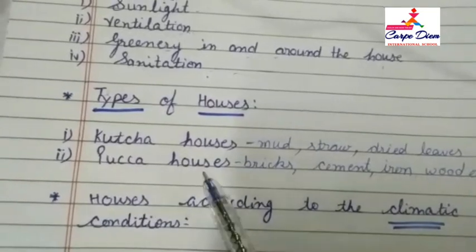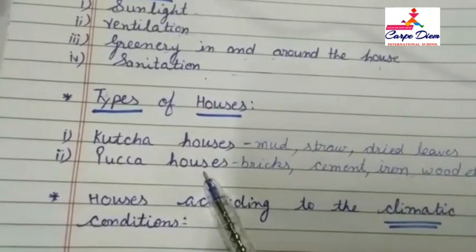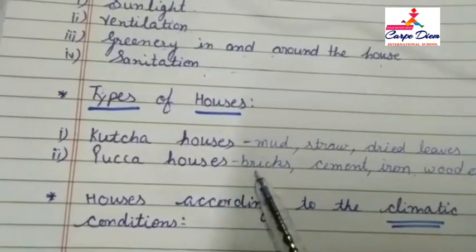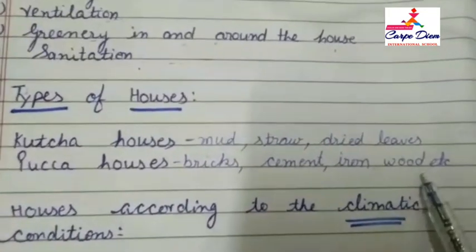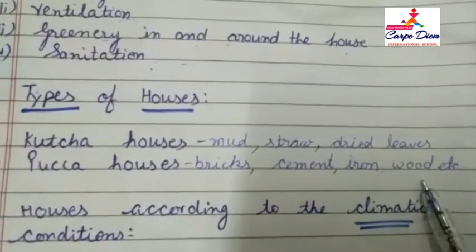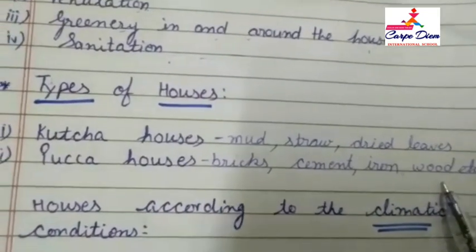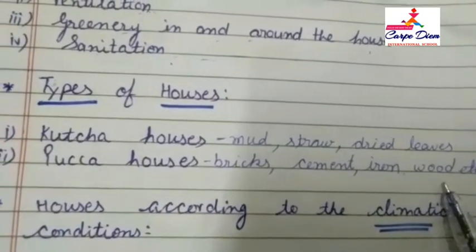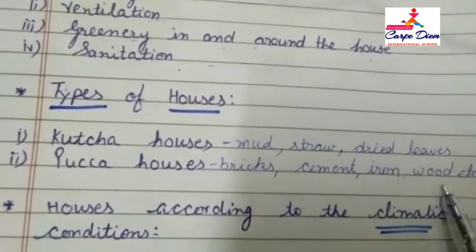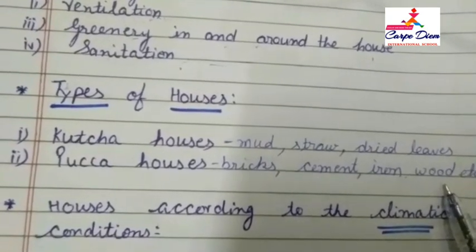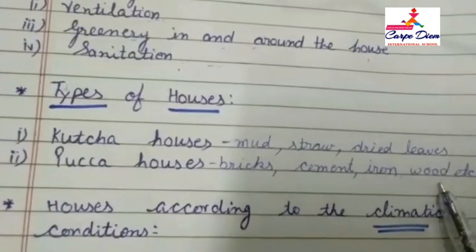Next is paka houses. Paka houses are made up of bricks, cement, iron, and wood etc. These houses are stronger and durable. Such houses have many rooms like a drawing room, dining room, and bedroom etc.